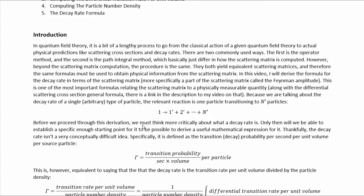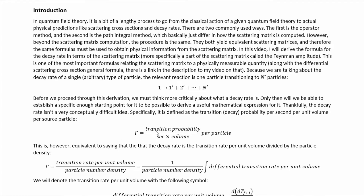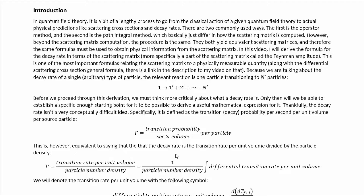Before we proceed through this derivation, we must think more critically about what a decay rate is. Only then will we be able to establish a specific enough starting point for it to be possible to derive a useful mathematical expression for it. Thankfully, the decay rate isn't a very conceptually difficult idea. Specifically, it is defined as the transition or decay probability per second per unit volume per source particle. It's usually denoted with gamma. This is equivalent to saying that the decay rate is the transition rate per unit volume divided by the particle density.